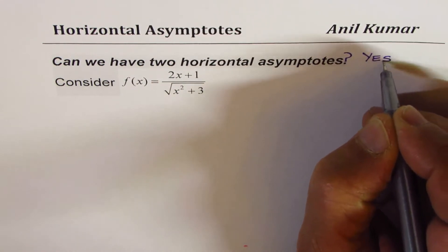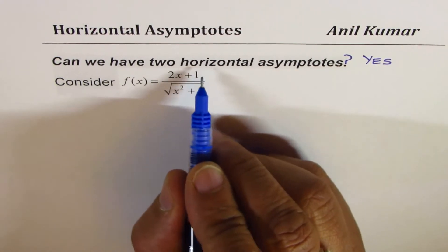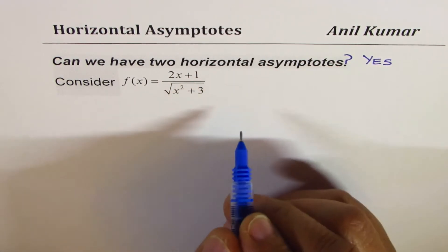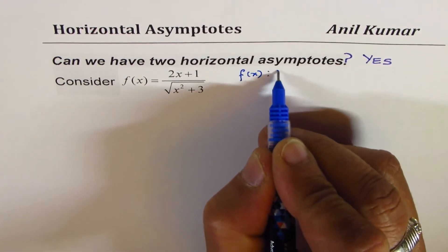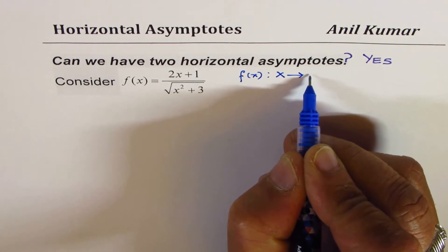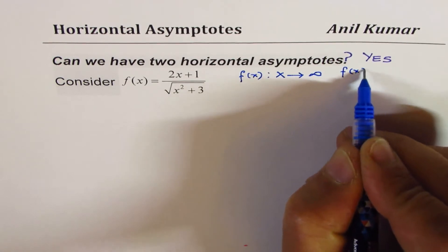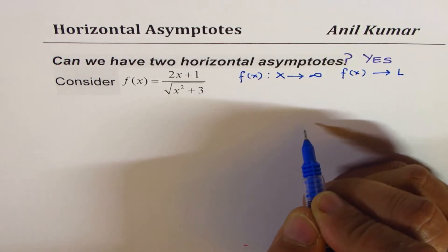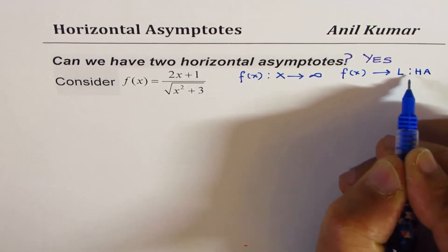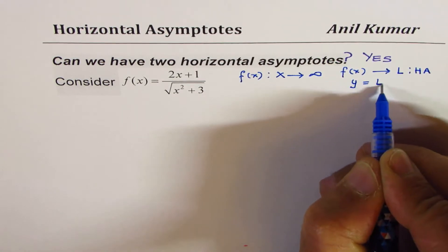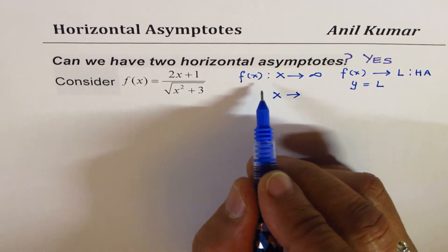To begin with, let's understand what is a horizontal asymptote and how do we define it. Basically, if for a given function the value of x is approaching a large positive value, for example infinity, and the function approaches a fixed value, let's say L, then we say there is a horizontal asymptote and the equation is y equals L.